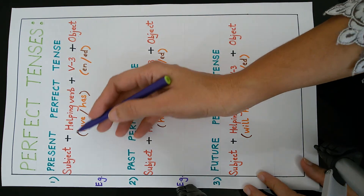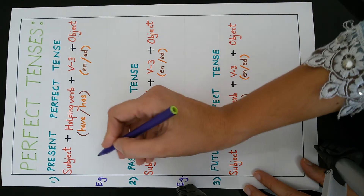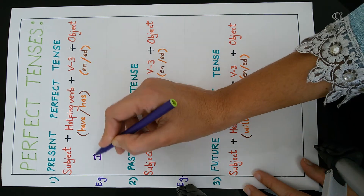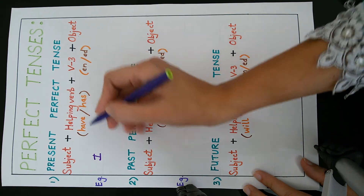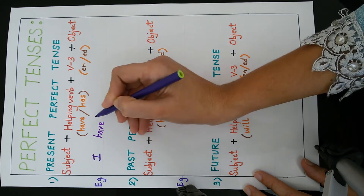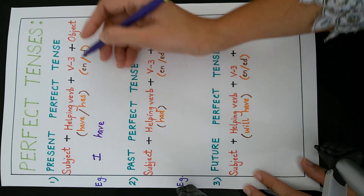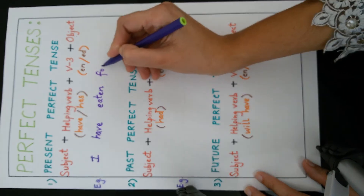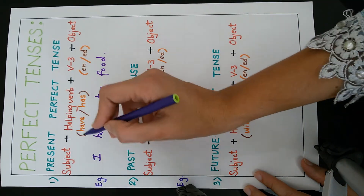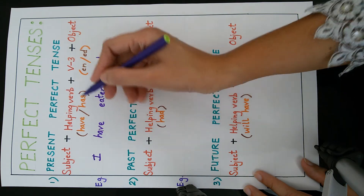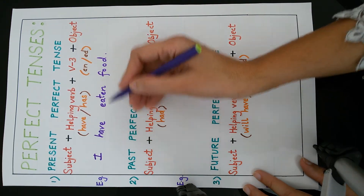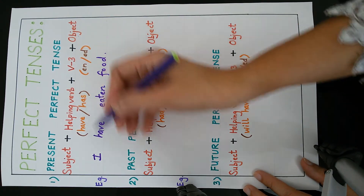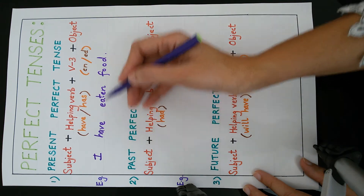Using this formula, we are going to write the sentence. With the subject 'I', we will use the helping verb 'have': I have eaten food. If the subject is he or she, we use 'has': He has eaten food, she has eaten food. If the subject is we or they, we use 'have': We have eaten food, they have eaten food.